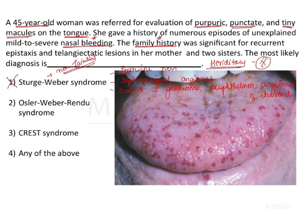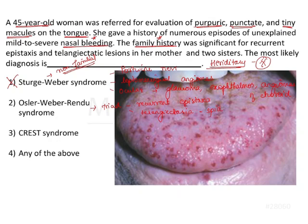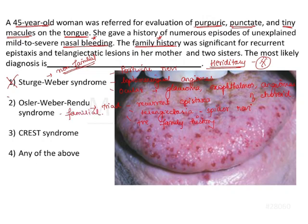The next option is Osler-Weber-Rendu syndrome, which presents as a triad. This triad consists of: recurrent epistaxis, numerous telangiectatic lesions — telangiectasia being small dilated capillaries appearing like spider nevi — and a positive family history. All three features of this triad are seen in the clinical case of our question. Therefore, Osler-Weber-Rendu syndrome is a familial condition that matches the patient's presentation of epistaxis, telangiectasia, and family history.